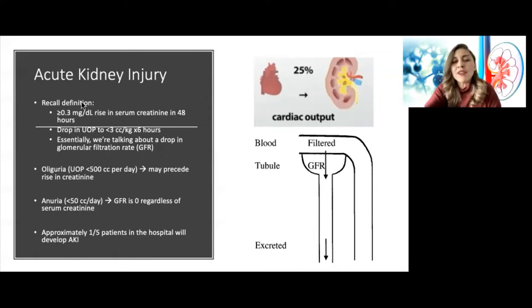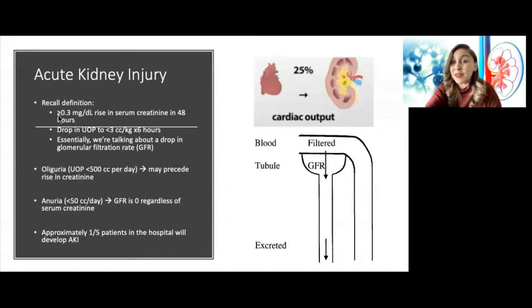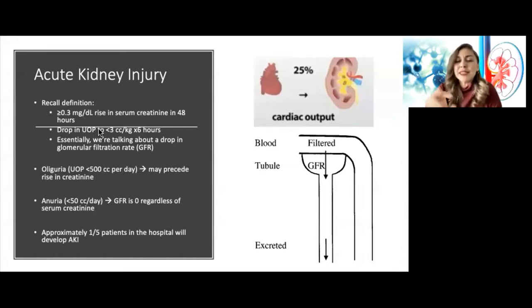The definition of AKI uses the imperfect marker of serum creatinine: a 0.3 mg/dL rise within 48 hours. But a patient may have AKI without mounting this response — for instance, if they don't have a lot of muscle mass. The drop in urine output may be the first sign of acute kidney injury. The most important thing is to pick up on the fact that your patient is having a drop in GFR.